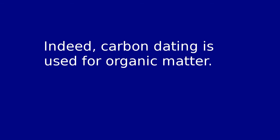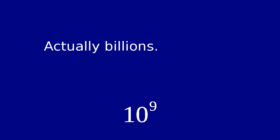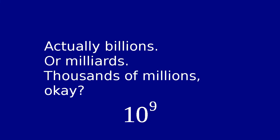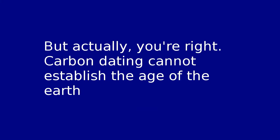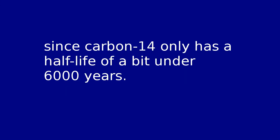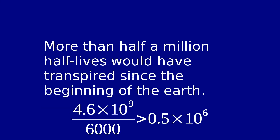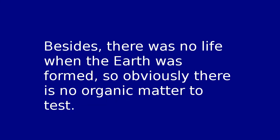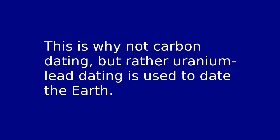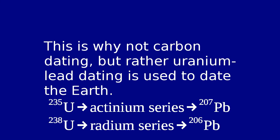'To try to determine how old something was when it died.' Indeed, carbon dating is used for organic matter. 'There are several problems with carbon dating. Number one, it never can prove the Earth is millions of years old.' Actually, billions — or millions — thousands of millions. But actually, you're right: carbon dating cannot establish the age of the Earth, since carbon-14 only has a half-life of a bit under 6,000 years. Besides, there was no life when the Earth was formed, so obviously there is no organic matter to test. This is why not carbon dating, but rather uranium-lead dating, is used to date the Earth.